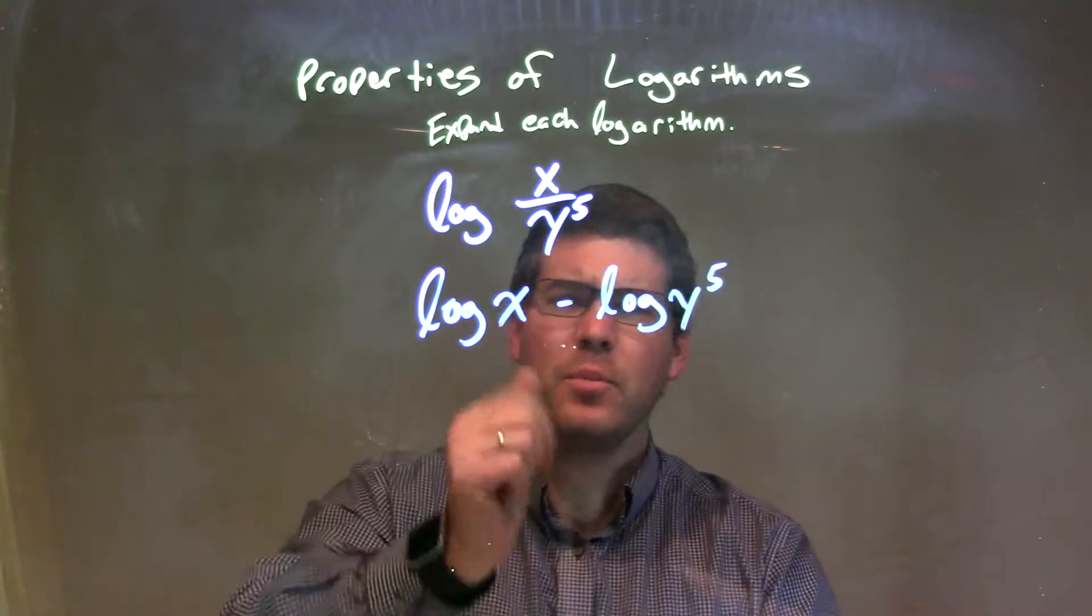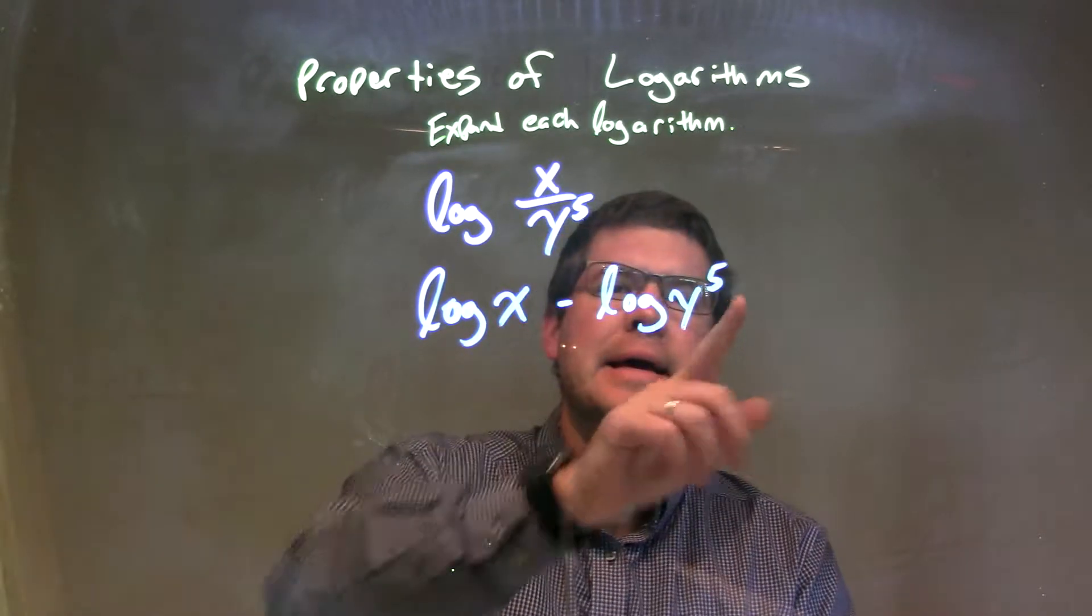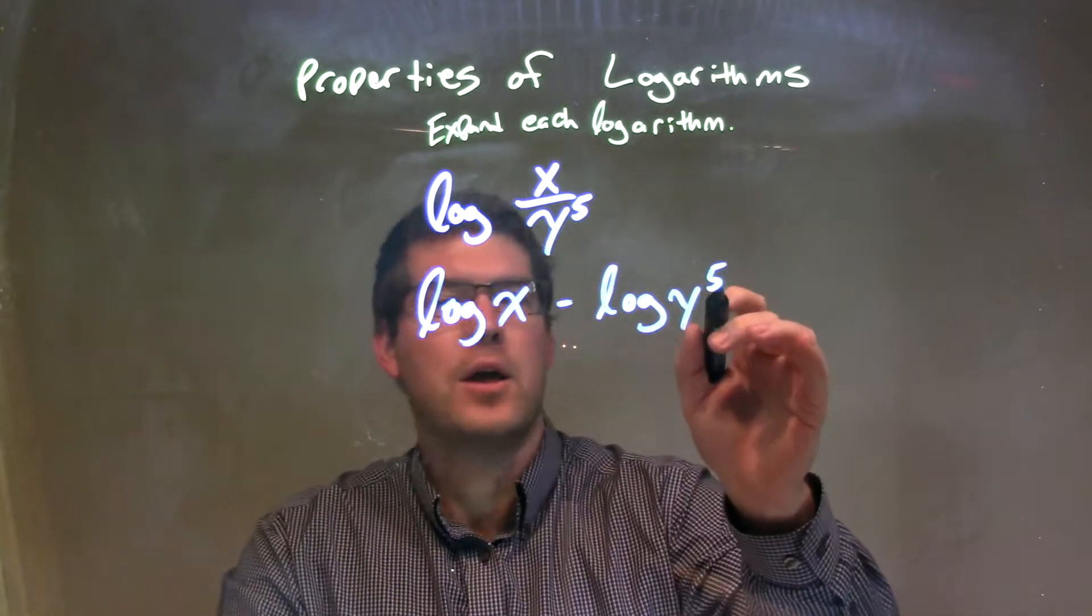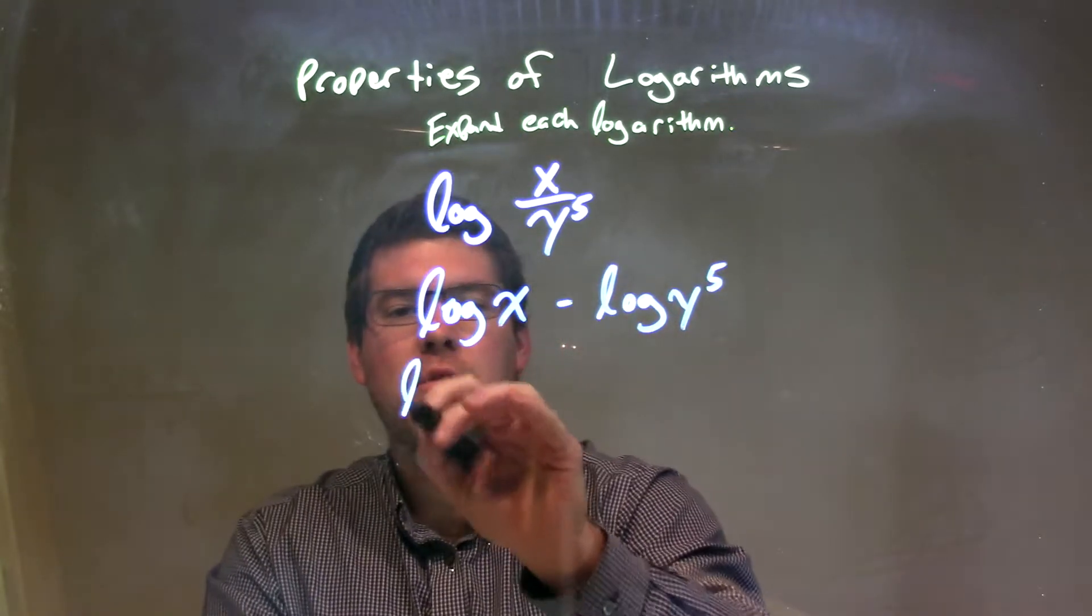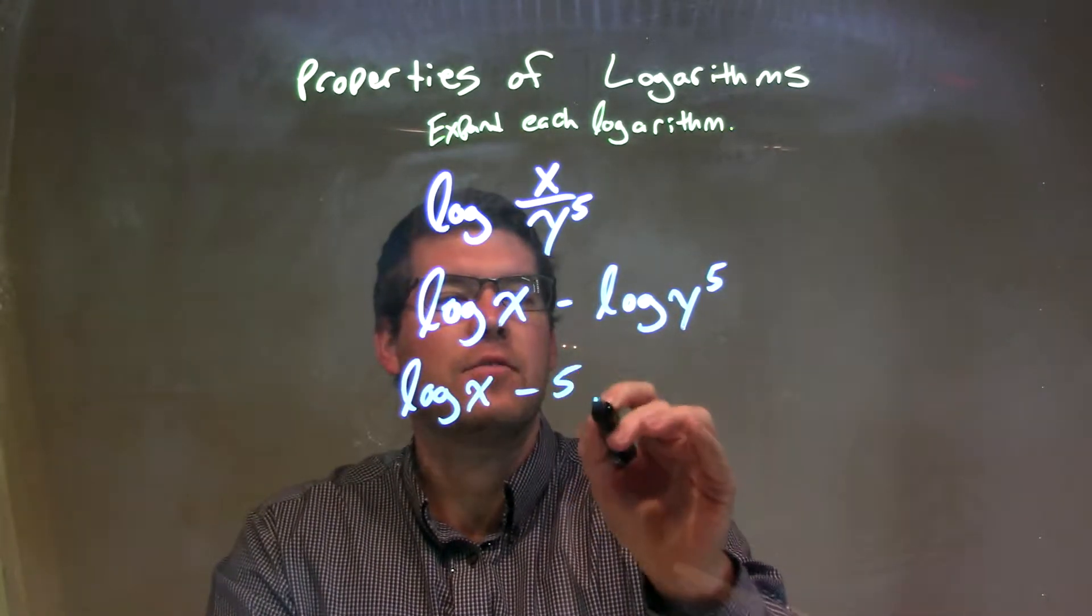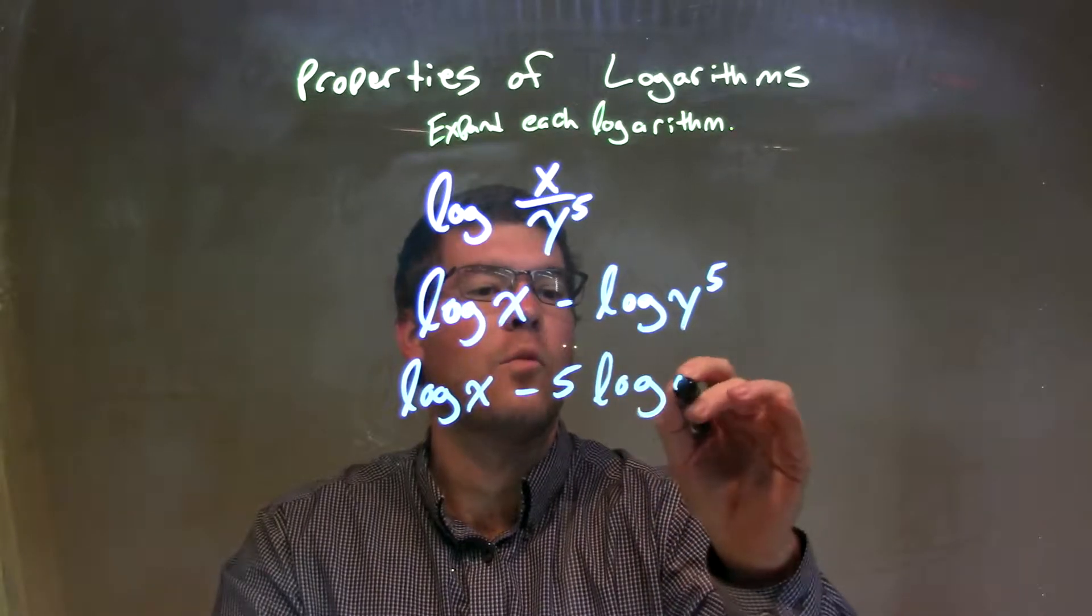Now, from there, we're not completely finished. That exponent, that fifth power, can come out front. So, we have log of x minus 5 log of y.